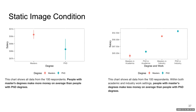Half the participants saw a static image. You can see on the graph on the left that people with master's degrees make more money on average than people with PhD degrees. However, in the graph on the right, when broken out by workplace, whether in academia or industry, people with PhD degrees make more money on average compared to people with only a master's degree.